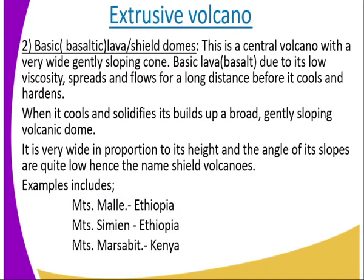Number two, we have the basic or basaltic lava shield volcanoes. This is a central volcano with a very wide, gently sloping cone, indicating the material used to form it was basic lava due to its low viscosity. It spreads and flows for a long distance before it cools and solidifies, building up a broad, gently sloping volcanic dome. It is very wide in proportion to its height, and the angles of its slope are quite low — hence the name shield volcanoes. Examples are Mount Erta Ale and Mount Simien in Ethiopia, and Mount Marsabit in Kenya.